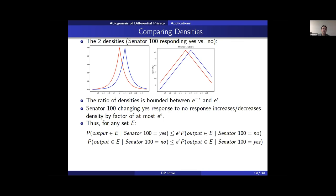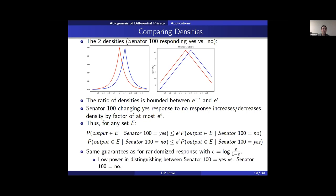These are the same equations that gave us the randomized response privacy guarantees. They guarantee that any data snooper, even with the help of the other 99 senators, would have low confidence in determining whether Senator 100 voted yes or no. And this guarantee is not specific to Senator 100 — any senator gets this guarantee, even if all other senators collude and use the latest data science techniques or future inference methods. Differential privacy is future-proof.